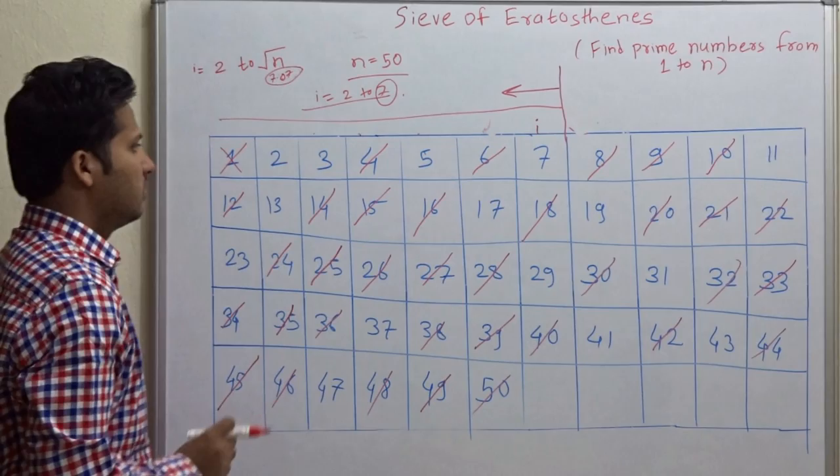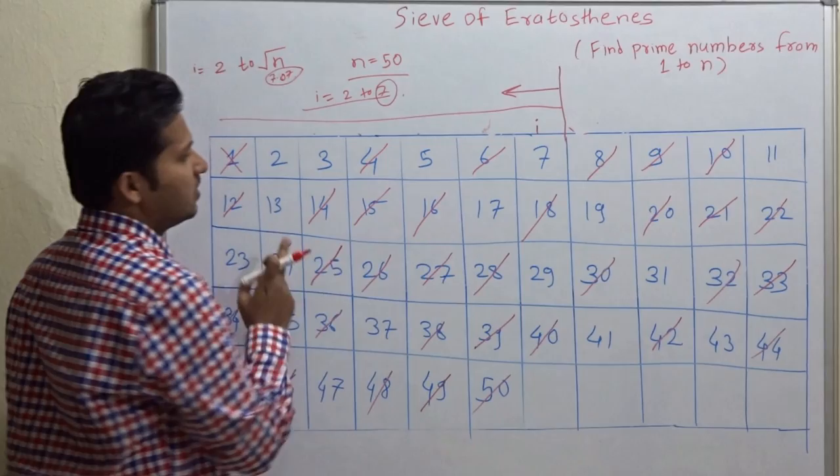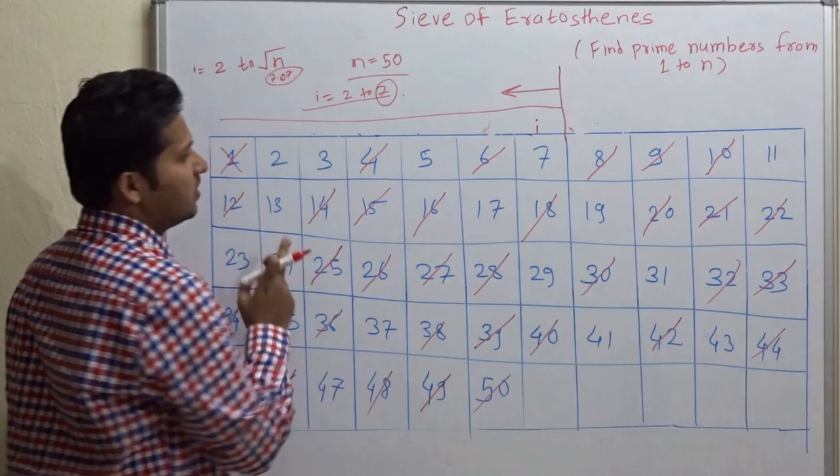All the remaining numbers which are not cancelled are prime numbers from 1 to 50. That is 2, 3, 5, 7, 11, 13, 17, 19, 23, 29, 31, 37, 41, 43, and 47.